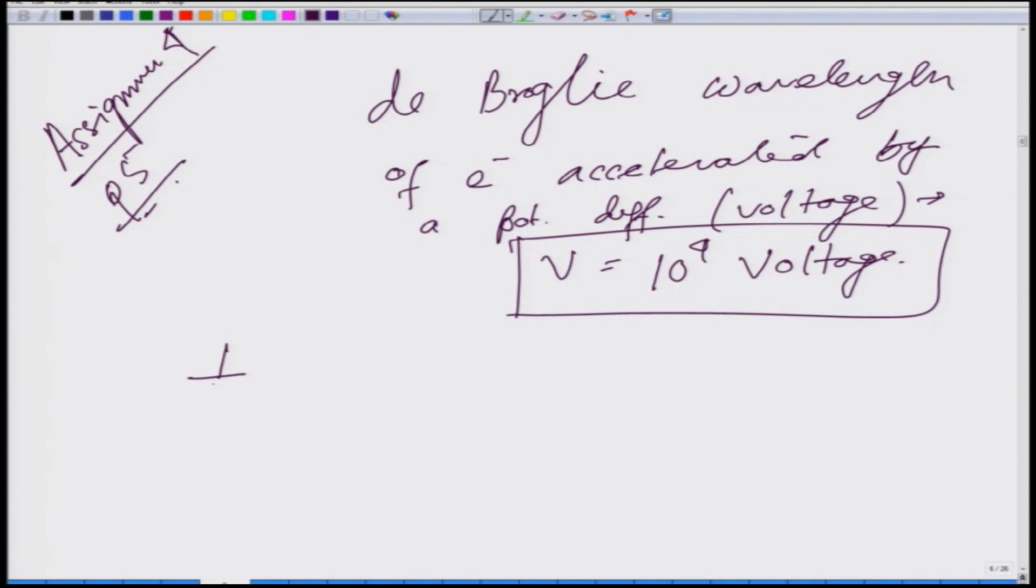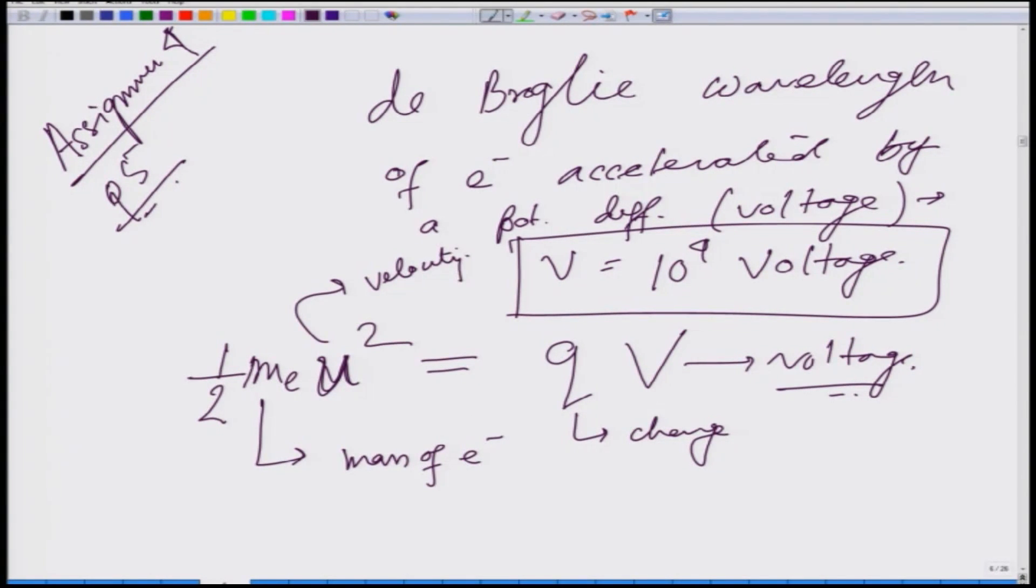The kinetic energy is half m e u square is q times v where q is the charge, v is the voltage difference, and m e is the mass of electron and u is the velocity of electron. If I multiply both side with the mass of electron what I will get is m e square u square is 2 q v and you can already see that m e u is nothing but the momentum which is root over of 2 q v m e.